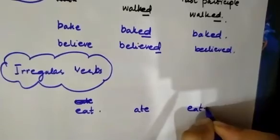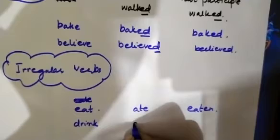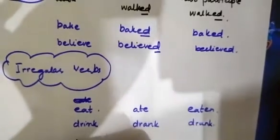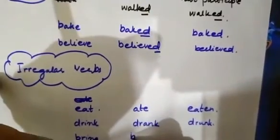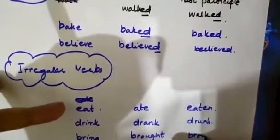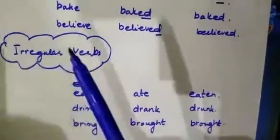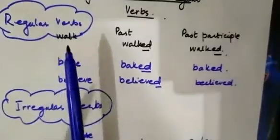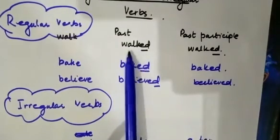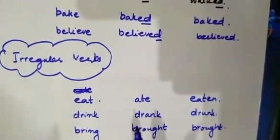Next verb is drink drank drunk, bring brought brought. So these are the irregular verbs. What are the regular verbs? Regular verbs, when we use those verbs in past tense, we just add ed or d. Irregular verbs change their spellings in the past tense.